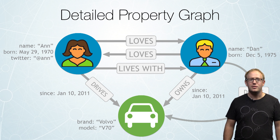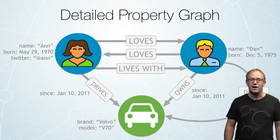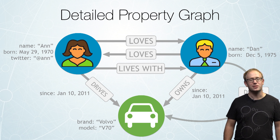That is a very simple property graph. You have the nodes, you have the relationships, and you have the properties on both the nodes and the relationships.